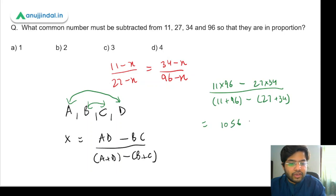27 into 34 comes out to be 918. 11 plus 96 is 107 minus (27 plus 34 is 61), so this is what we need to calculate out.